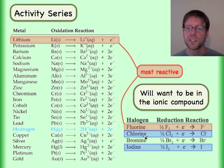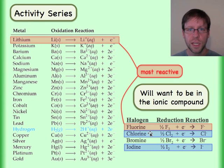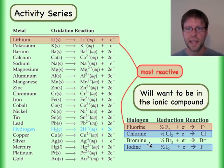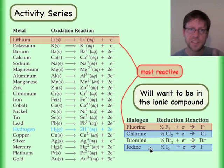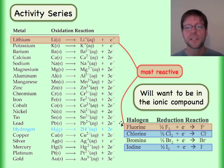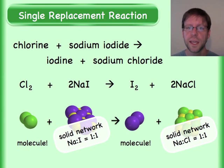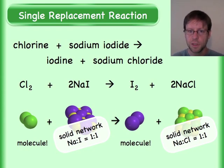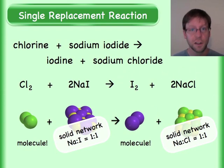If we check the activity series, we had chlorine and iodide — those are the two options for what's going to be in the ionic compound. Chlorine is above, so chlorine is ultimately going to be the thing in that empirical formula, and sure enough, there it is.